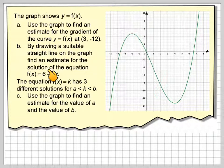By drawing a suitable straight line on the graph, find an estimate for the solution of the equation f of x is 6 minus 2x.